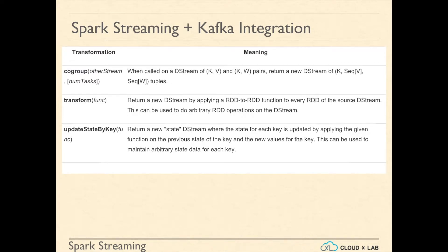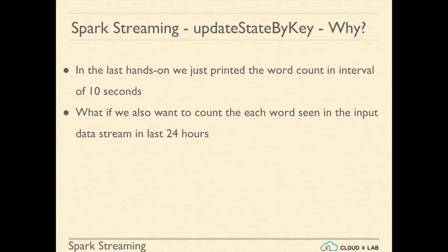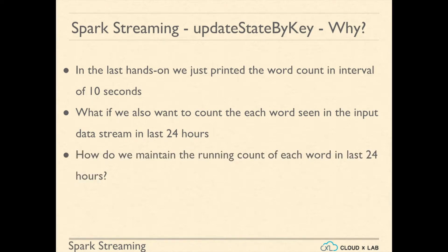Let us discuss a very important operation: UpdateStateByKey. Why do we need UpdateStateByKey? In the last hands-on on Spark Streaming with Kafka, we just printed word count in the batch interval of 10 seconds. Let us say we also want to count each word seen in the input data stream in the last 24 hours. How do we maintain the running count of each word in the last 24 hours?